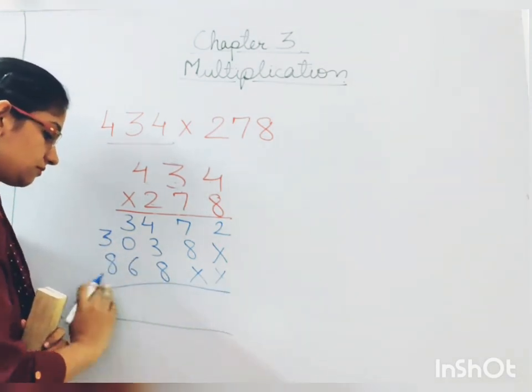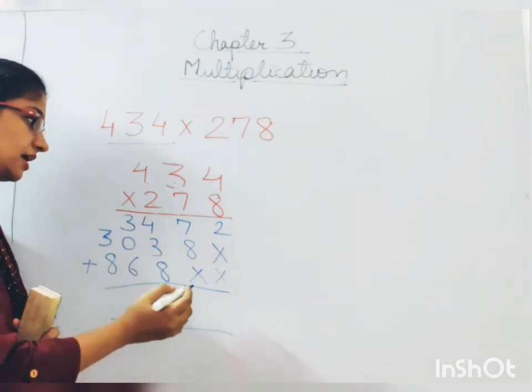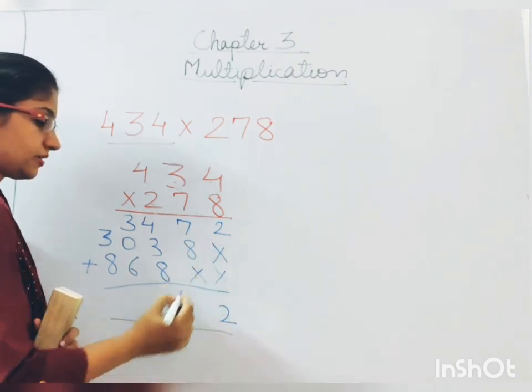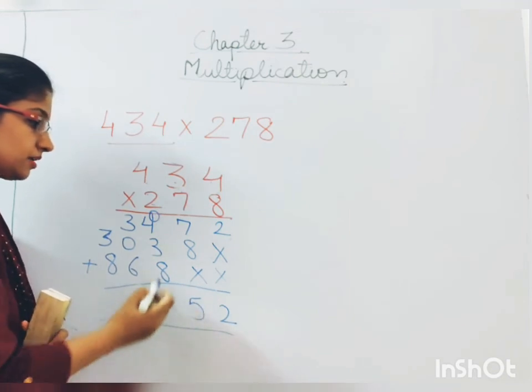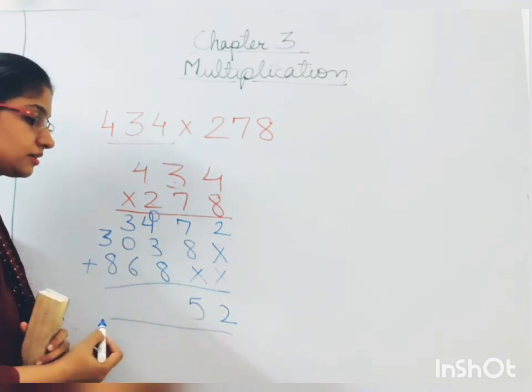Now. Make these lines. Put an addition sign. And add it up. So 2. 7 and 8 will be 15. 1 will go up. 5 will stay down. 4 and 1. 5. 5 plus 3. 8.